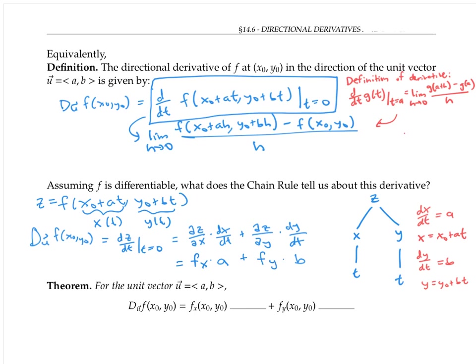We now have another expression for the directional derivative, and we've proved this theorem. For the unit vector u with components a and b, the directional derivative in the direction of u is given by f_x times a plus f_y times b. Note that f_x and f_y are evaluated at the point (x₀, y₀). That follows from the chain rule: since we're evaluating dz/dt at t equals zero, we need to evaluate f_x and f_y at x(0) and y(0), which is just x₀ and y₀.